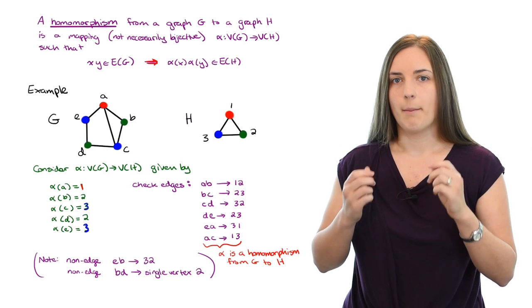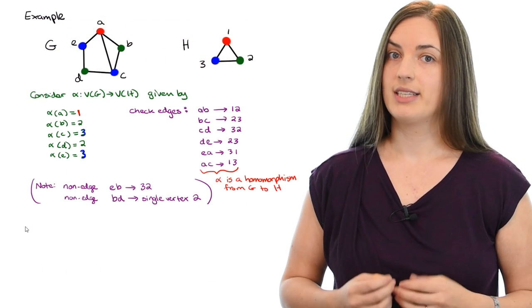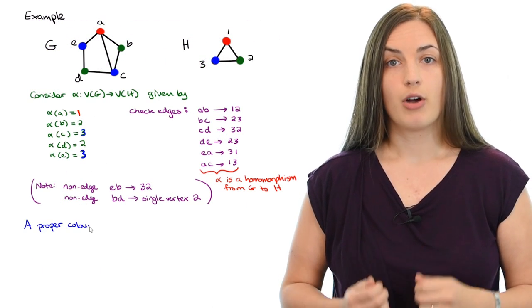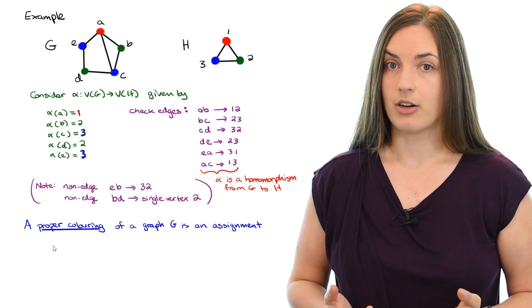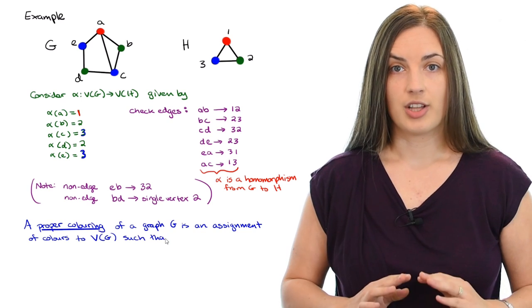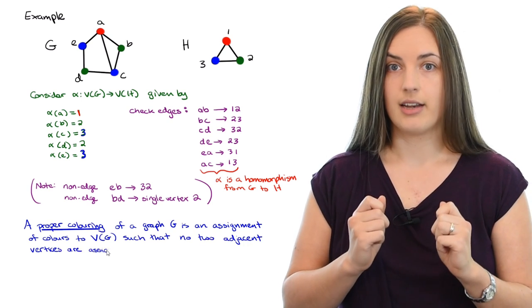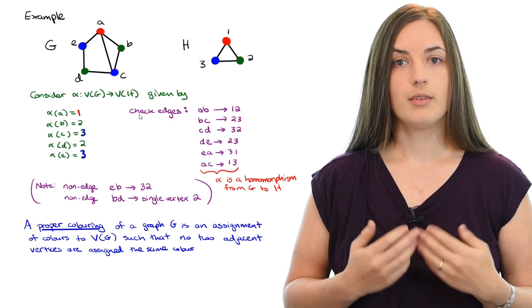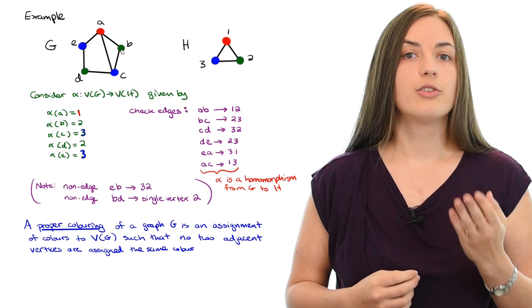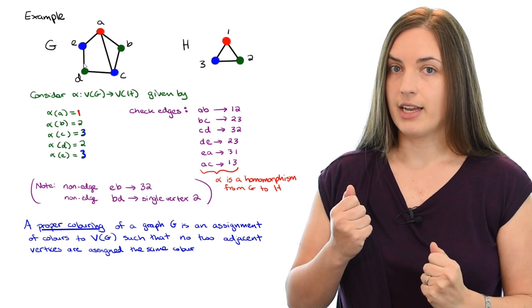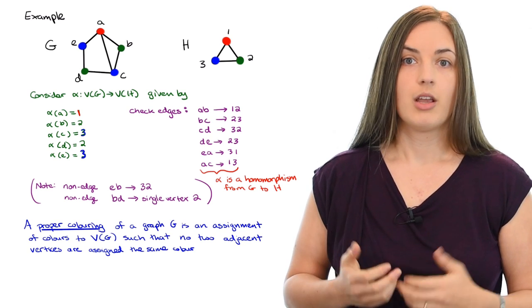Next, let me tell you a definition. A proper coloring of a graph G is an assignment of colours to the vertices of G, such that no two adjacent vertices are ever assigned the same colour. If we look at what happened in our graph G and the three colours that were assigned there, we'll notice that any time we have an edge, the endpoints of the edge have different colours. So indeed, we have a proper three colouring in this example.